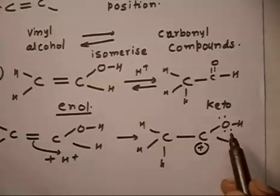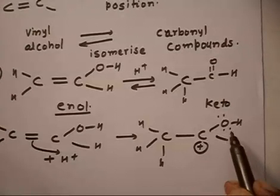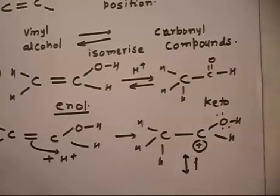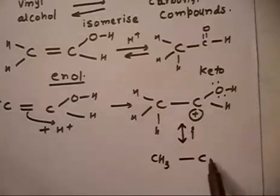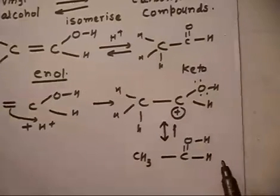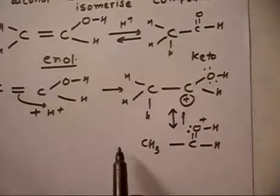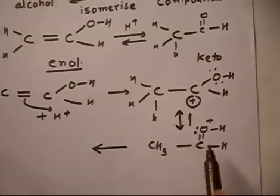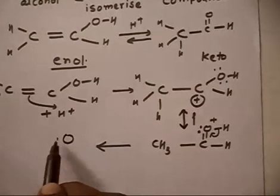This carbocation is fairly stable because of lone pair resonance — the oxygen donates its lone pair to the carbon. So we can write a resonating structure: CH3–C double bond OH with a positive charge on oxygen and one lone pair. In the next step, this can lose one H+ because the reaction is acid-catalyzed.